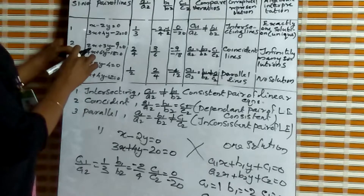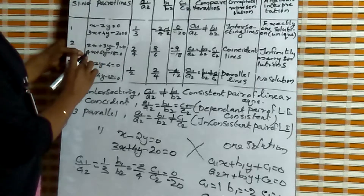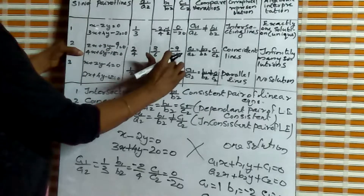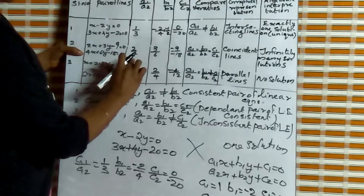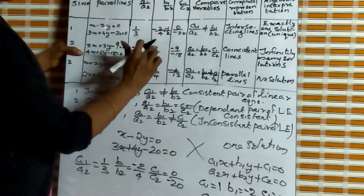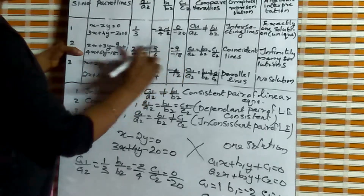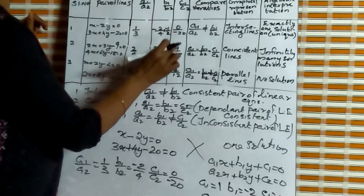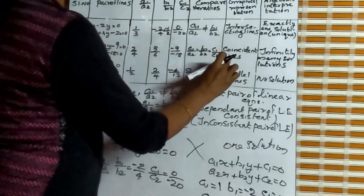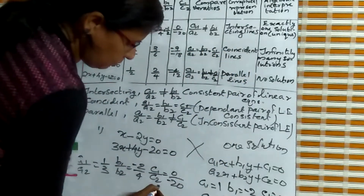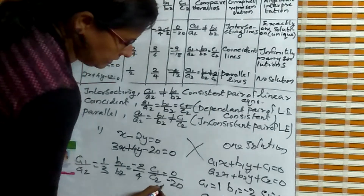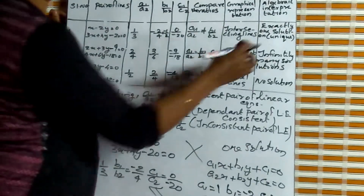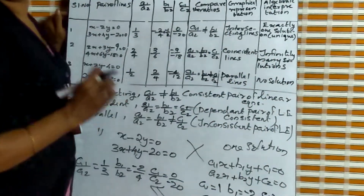For the second equation, comparing a1 by a2 equals 2 by 4 equals 1 by 2; b1 by b2 equals 3 by 6 equals 1 by 2; and c1 by c2 is also 1 by 2. Since a1 by a2 equals b1 by b2 equals c1 by c2, we get coincident lines — that means for two lines we get one line — and coincident lines have infinitely many solutions.